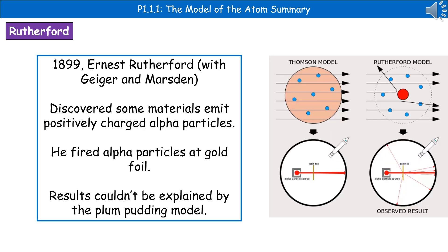Our third scientist is Ernest Rutherford, who carried out work in 1899 along with two other scientists, Geiger and Marsden. His work led to the discovery that some materials emit positively charged particles, which he called alpha particles.